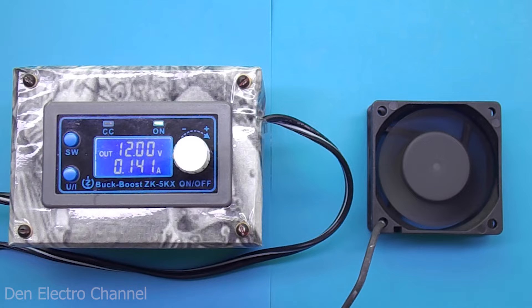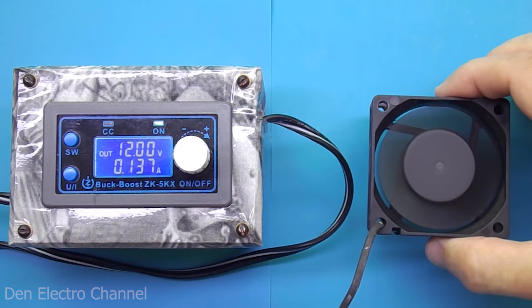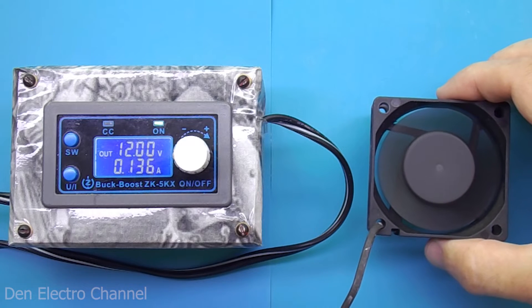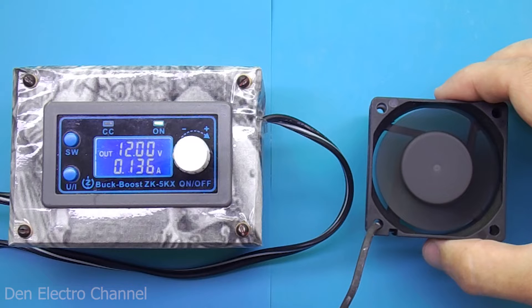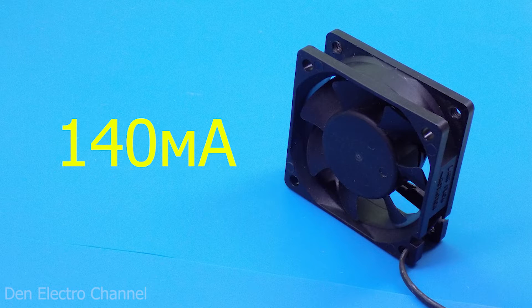The difference with the declared current is 30 milliamps. If you lift the fan so that it can suck in air, the readings will change slightly. Now that I know how much current the fan consumes, I can make the necessary calculations.